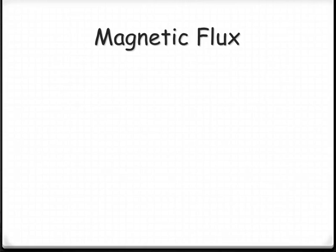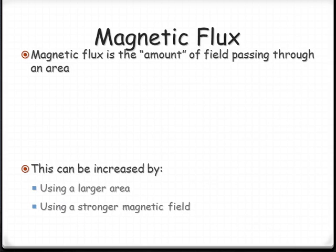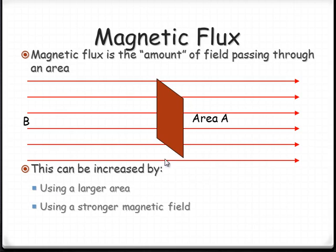Let's start by introducing a term called magnetic flux. Basically, magnetic flux is defined as the amount of field that's passing through a given area. If we look at the area as such, consider this to be three-dimensional, and the amount of magnetic field that's actually passing through that will be the flux. So in order to increase this, we can increase the amount of area, or we could use a stronger magnetic field.